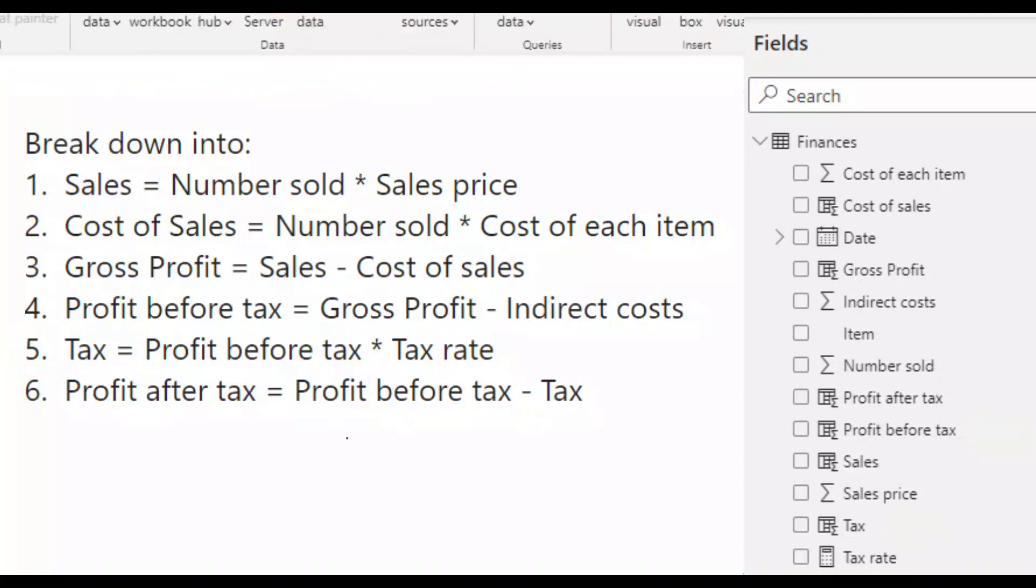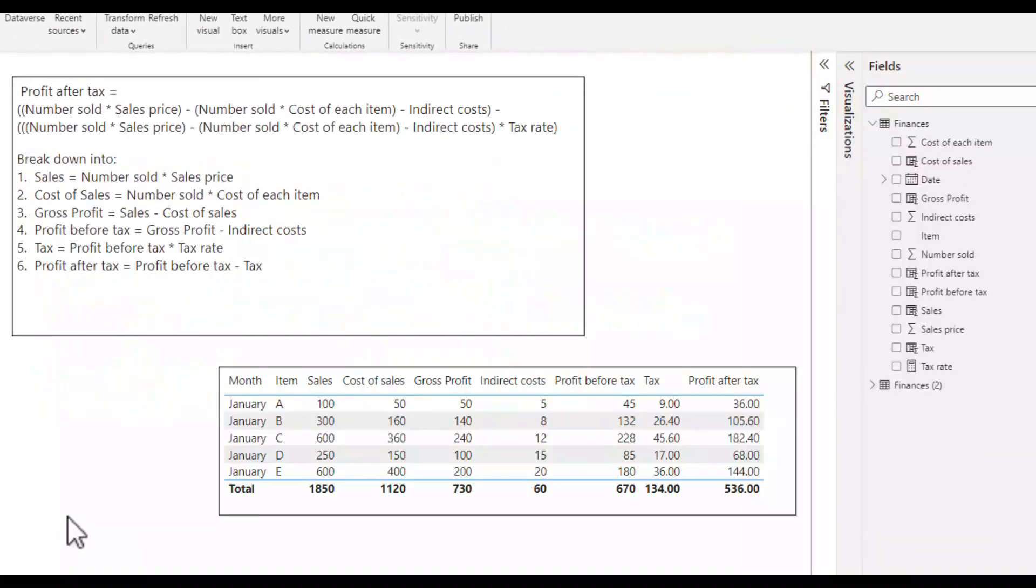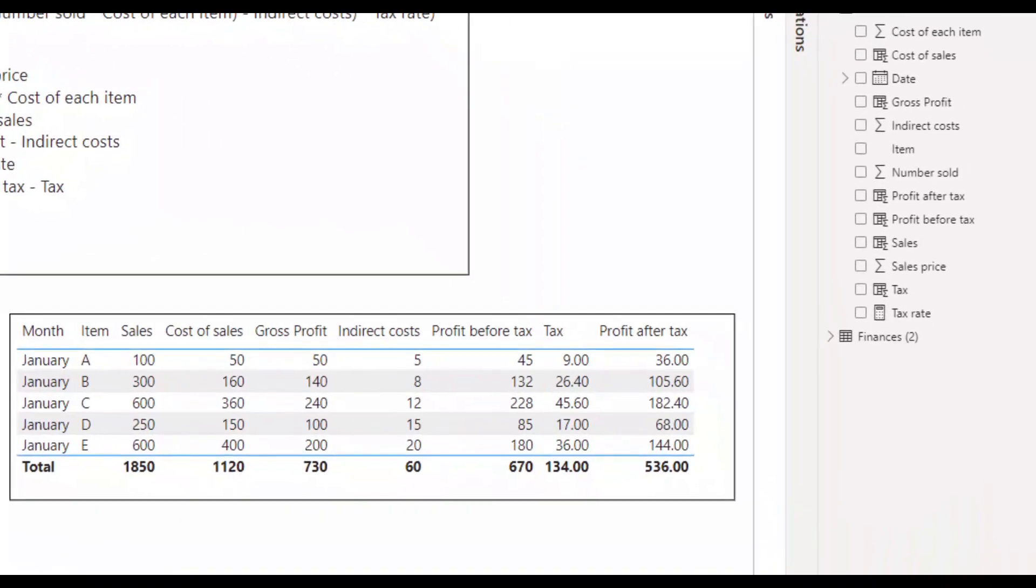By placing each step separately in calculated columns, any visualisation can use any of the steps on their own or in combination with others. For example, in the table shown here, I would like the reader to see the figures calculated at each step.